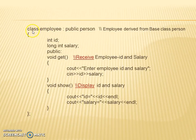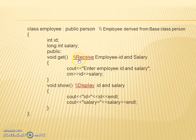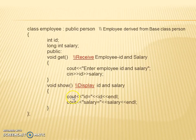Again, over here, we declared a class employee. The visibility mode is public and the base class is person. So from person, we derived a class employee. We declared some variables — int id and salary — since for an employee, id and salary are most important. We declared one more function void get, basically used for receiving values like employee id and salary. Using cout, values will be displayed to the user, and using cin the values will be accepted. Another member function void show is declared, which will help to display the id and the salary using cout.